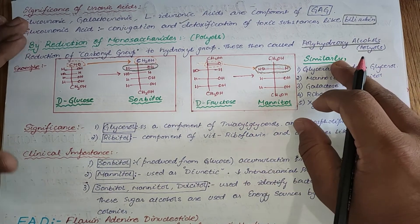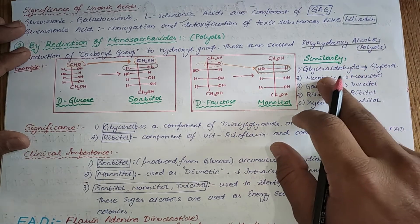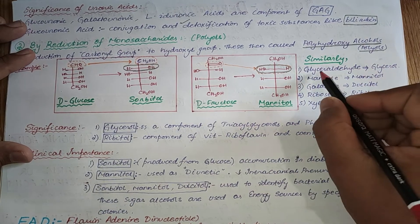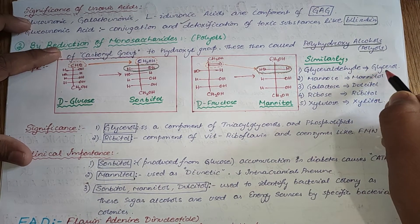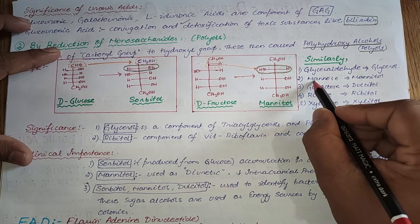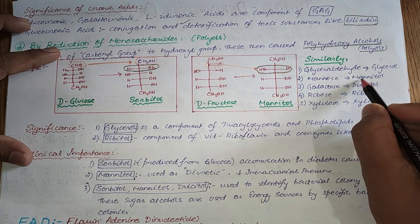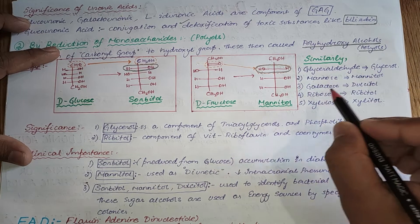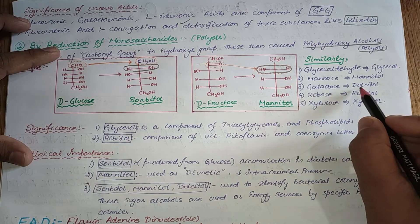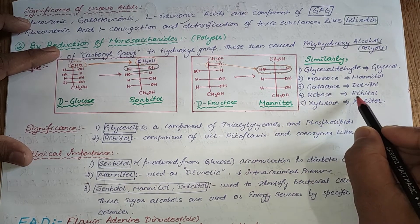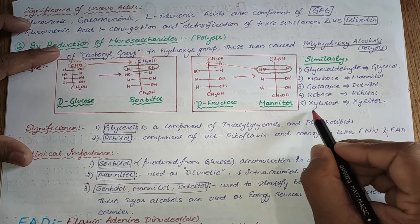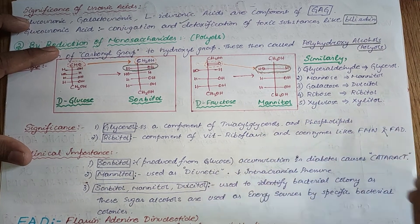Similarly, when glyceraldehyde undergoes reduction it gives glycerol. Mannose gives mannitol, galactose gives dulcitol, ribose gives ribitol, and xylulose gives xylitol.